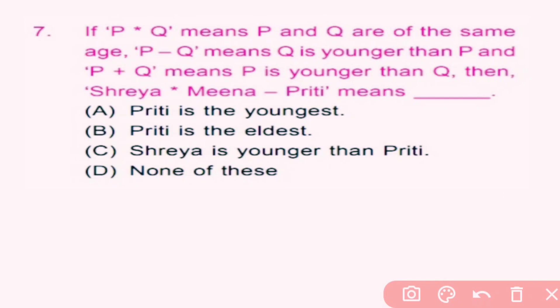Question number 7: If P×Q means P and Q are of the same age, P−Q means Q is younger than P, and P+Q means P is younger than Q, then what does 'Shreya × Meena − Priti' mean? Shreya × Meena means both are of the same age. Meena − Priti means Priti is younger than Meena. So Priti is the youngest. A is the correct answer.